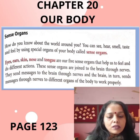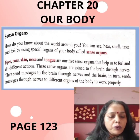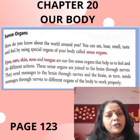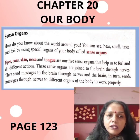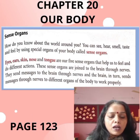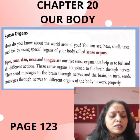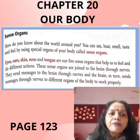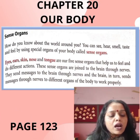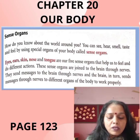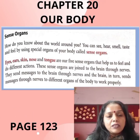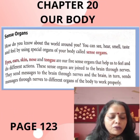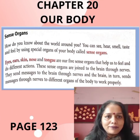Sense Organs. How do you know about the world around you? You can see, hear, smell, taste, and feel by using different organs of your body called sense organs. Eyes, ears, skin, nose, and tongue are our five sense organs. These sense organs are joined to the brain through nerves. They send messages to the brain through nerves, and the brain in turn sends messages to different organs of the body to work properly.